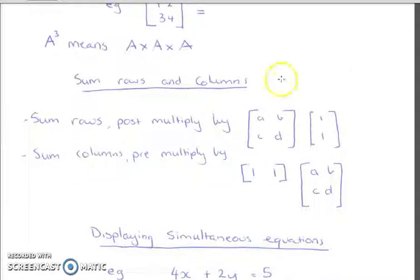Now, this one here does pop up quite often on exams, whether you're summing the rows or the columns in matrices. So if you want to sum all your rows, you post multiply by a matrix which is vertical ones. If you want to sum the columns, you want to pre multiply by a horizontal matrix of just ones.